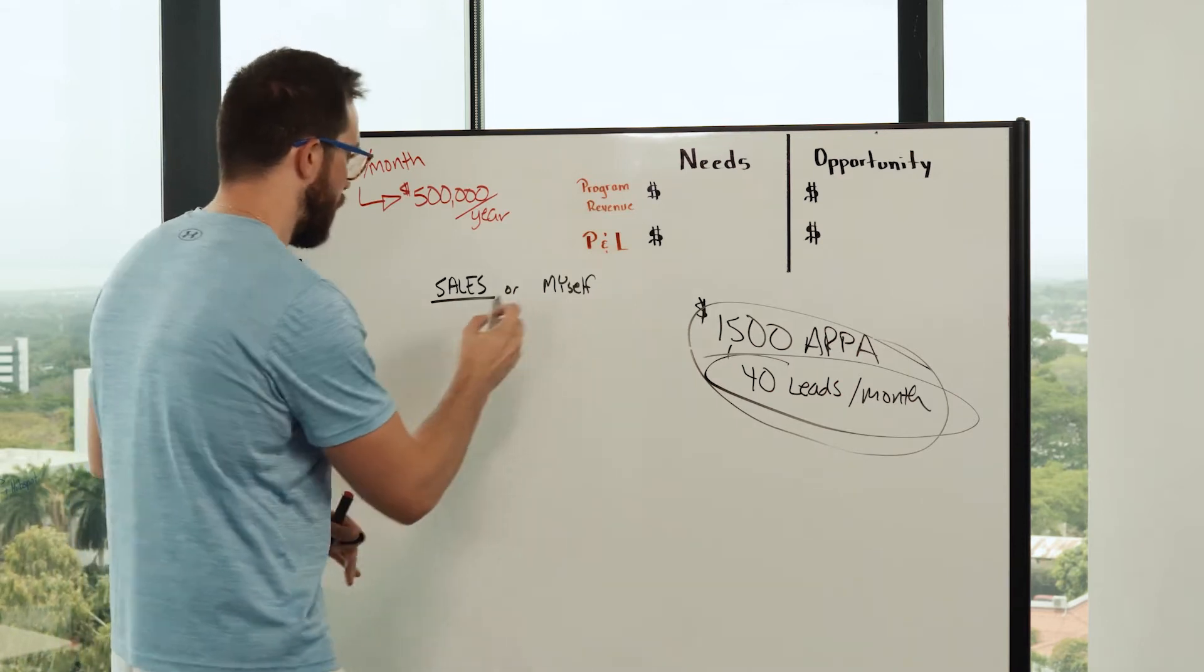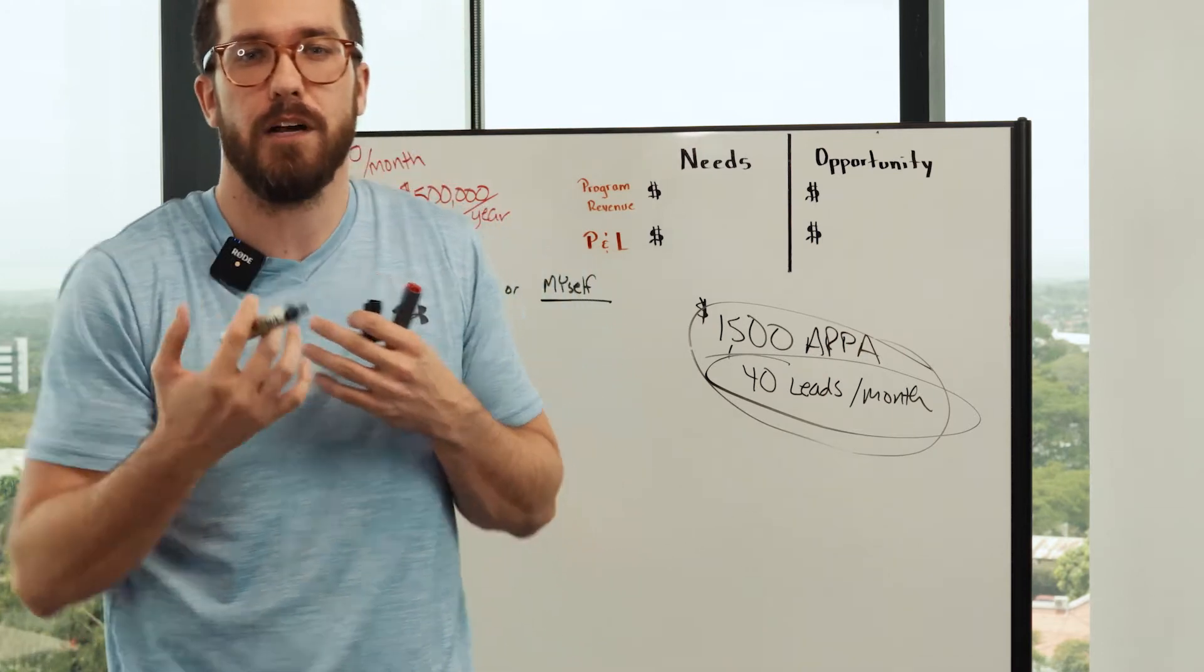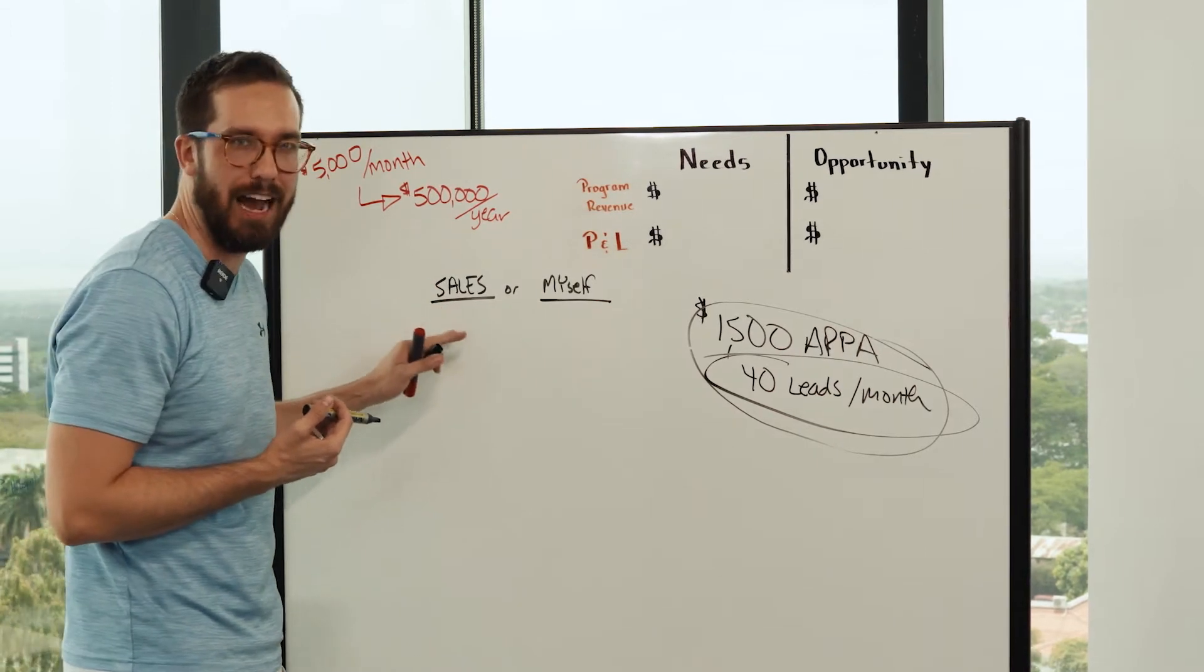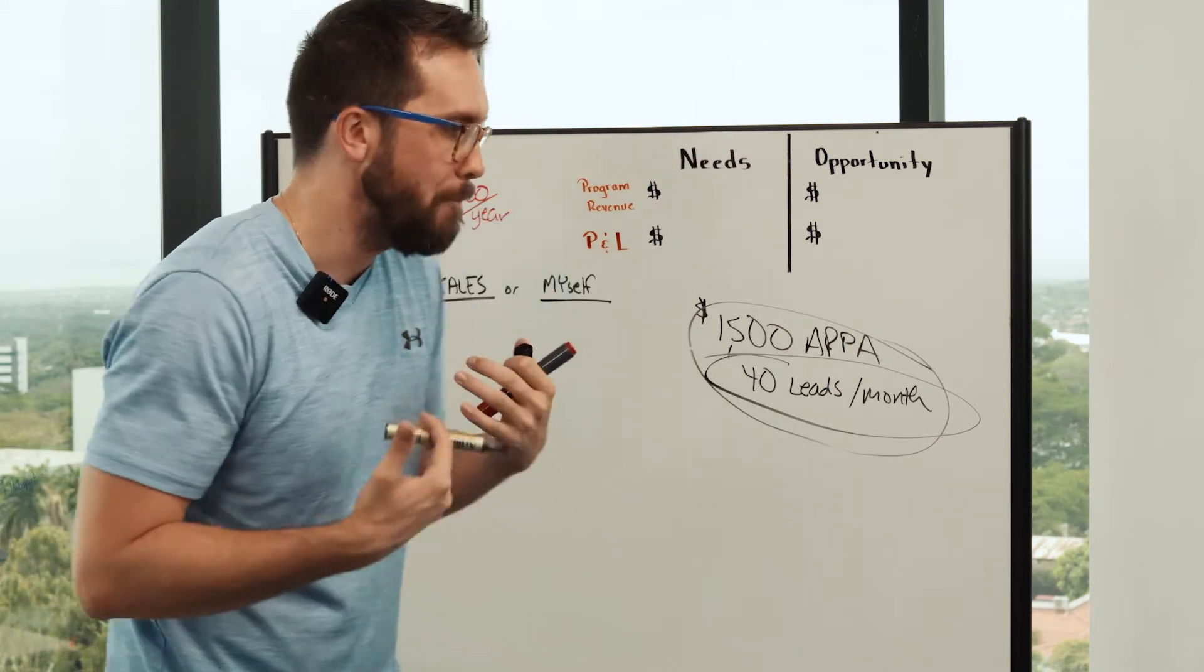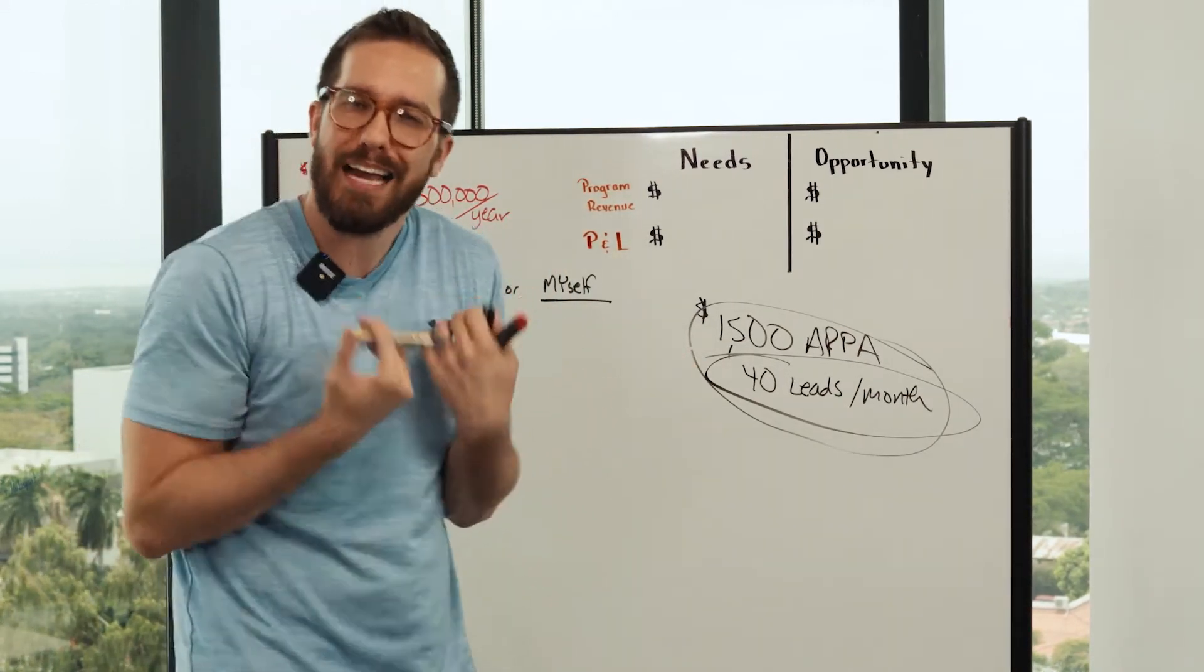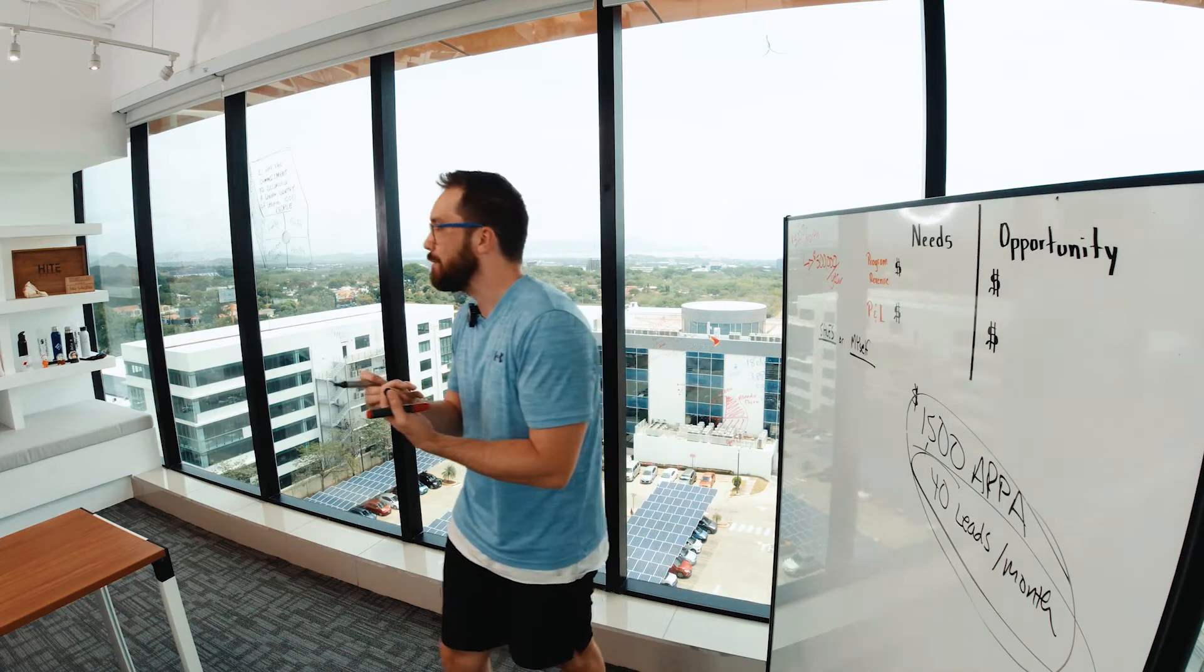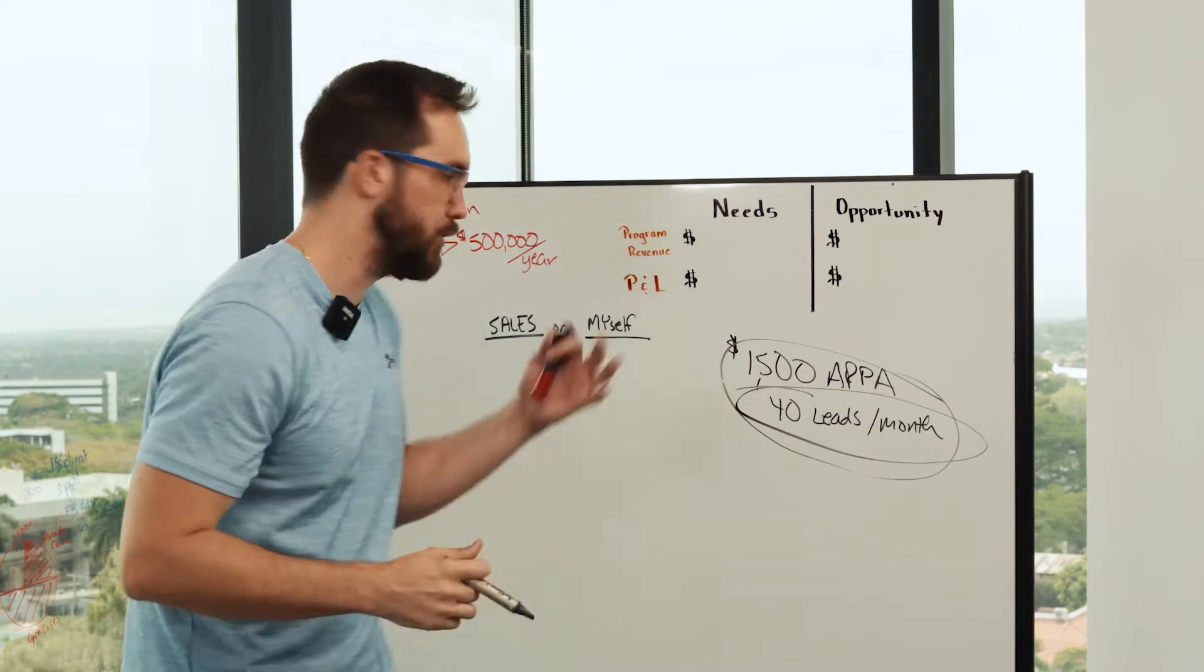You see, we have a couple of variables here, and the biggest one that I want to talk about first is the variable of the close rate. Even if I'm not as good of a salesperson as the sales guy that I'm going to hire, typically as the business owner, I can portray my business in a much higher way. People like working with entrepreneurs. They want to give us a chance. Normally, the close rate of a business owner is going to be much higher, or at least a little bit higher, than a sales guy.